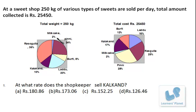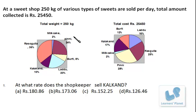In the cost pie diagram: burfi 12%, kalakand 17%, milk cake 2%, penne 28%, rasgulla 25%, laddu 16%. For example, 2% of 250 kg is 5 kg of milk cake. Its cost contribution is 2% of Rs. 25,450, which is around Rs. 500. So 5 kg of milk cake costs around Rs. 500. Now let's take up questions one by one, discussing various time-saving and smart techniques. I have taken 10 questions based on these pie diagrams.